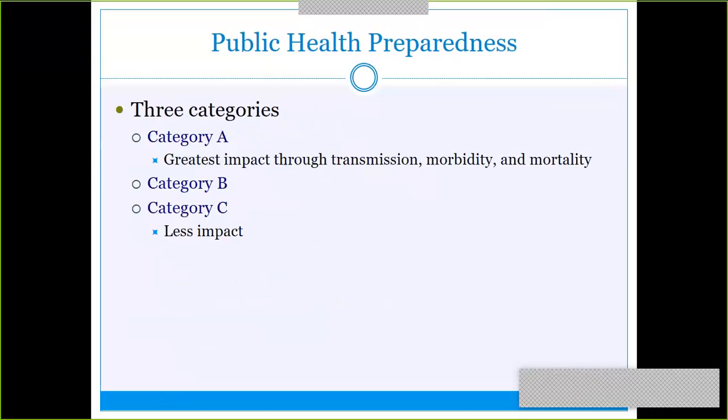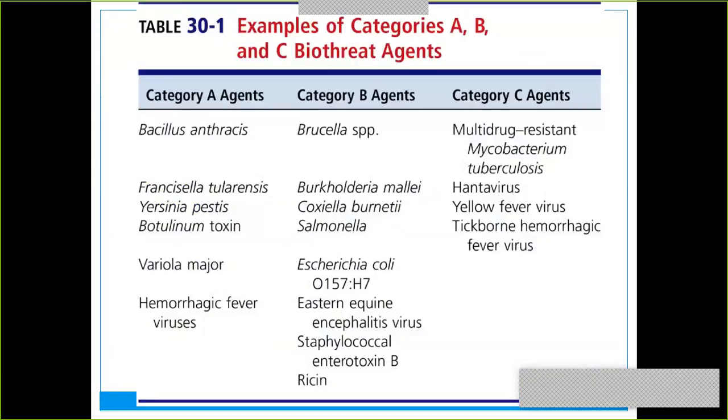There are three categories of public health preparedness with bioterrorism, separate from the biosafety levels of our hoods and equipment. Category A agents are the very most impactful — the worst of the worst bioterrorism agents, known to do the most harm and highest mortality. Category B is medium risk, and category C is less impactful.